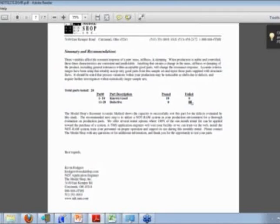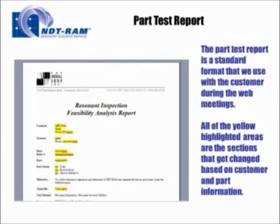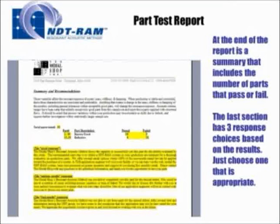In the part test report template we have three endings where you will choose the appropriate response. We have a good response, an unclear response, and a bad response. This makes it a lot easier to complete the report — to tell the customer yes this is a good application, or the results are unclear and we need to explore a little more, or we feel that this is not a great application for NDT RAM.